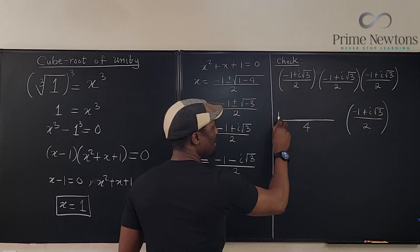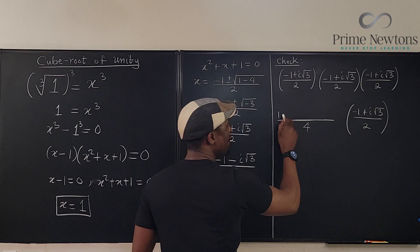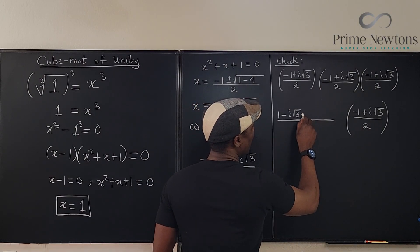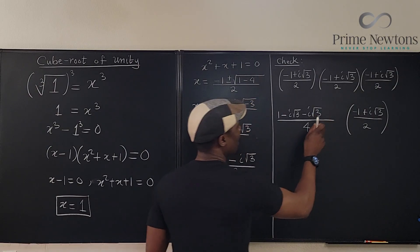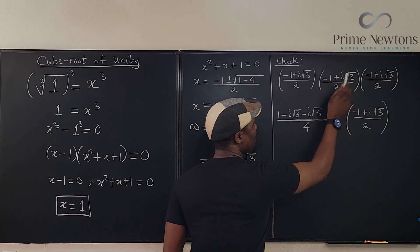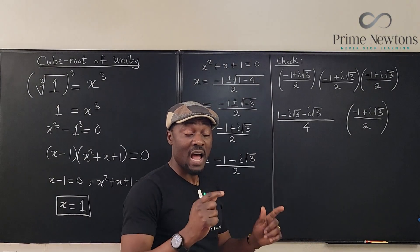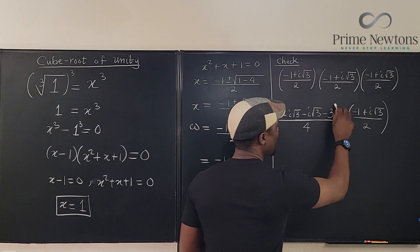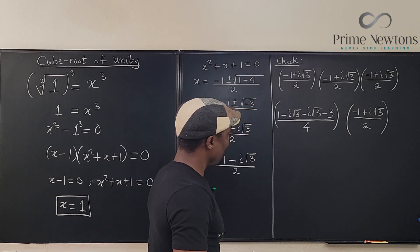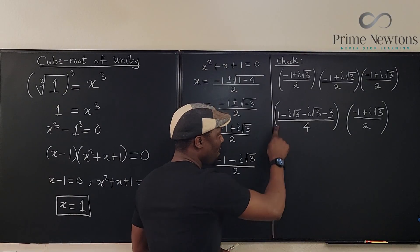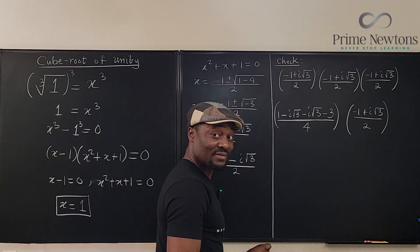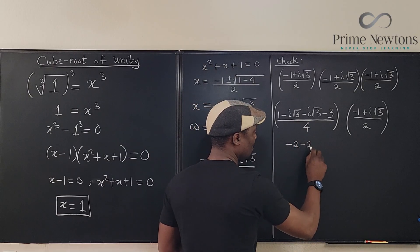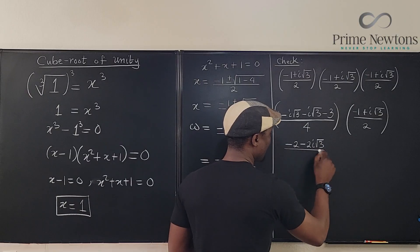Minus 1 times minus 1 is gonna give me 1. Minus 1 times this is gonna give me minus imaginary square root of 3. This times this is gonna give me minus imaginary square root of 3. Imaginary square root of 3 times imaginary square root of 3 is going to be minus 3 because i times i is minus 1. And square root of 3 times square root of 3 is 3. So, it's gonna be minus 3. That's what I've got. There's something showing up. Look. What is 1 minus 3? It's negative 2. These are the same. They don't cancel out. So, I get 2 of them.